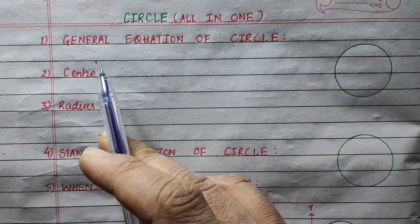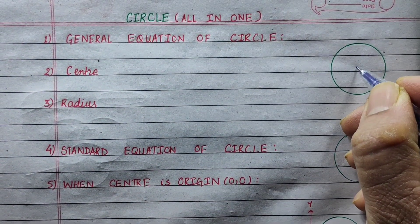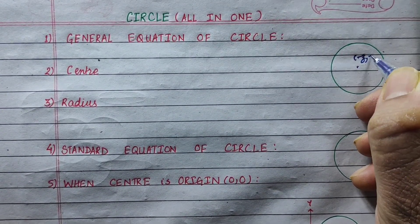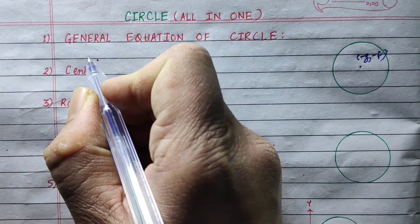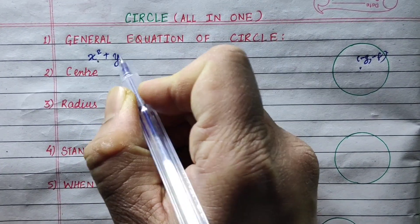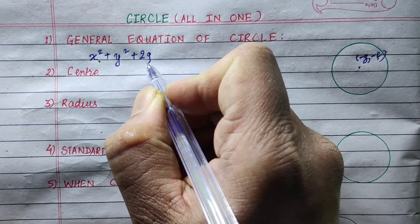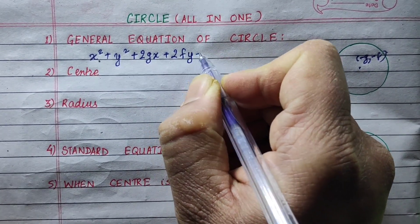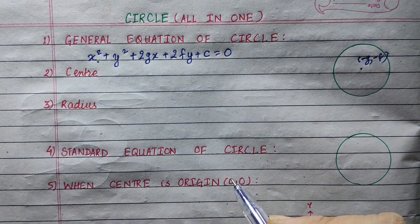Circle. This is the general equation of a circle. The general equation of a circle is: x squared plus y squared plus 2gx plus 2fy plus c equals 0.